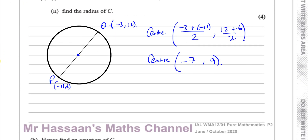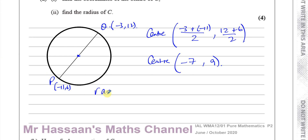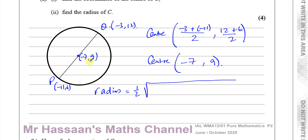We need to find the radius of the circle. You can find it in different ways — you could find the length of the diameter and divide by 2, or we could use the center that we found, minus 7, 9, and find the distance between that and one of the given points. The safest thing to do would be to use half the diameter, because if we made a mistake finding the center, our answer for this part would also be wrong. If we use the two given points P and Q, we know those are correct, so any error in the center won't carry over.